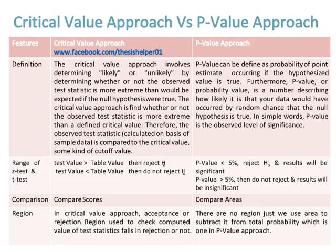The decision rule for the critical value approach is: if the test value is greater than the table value, reject H-naught; if the test value is less than the table value, do not reject H-naught. While in the p-value approach, if the p-value is less than five percent, reject H-naught and results will be significant; if the p-value is greater than five percent, do not reject H-naught and results will be insignificant — for both z-test and t-test.